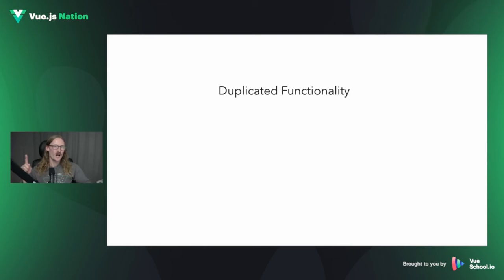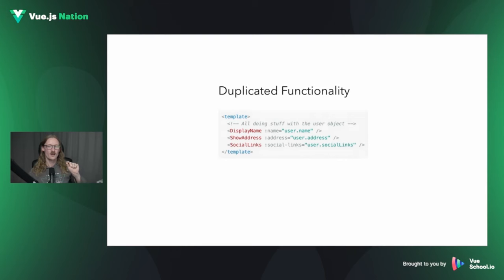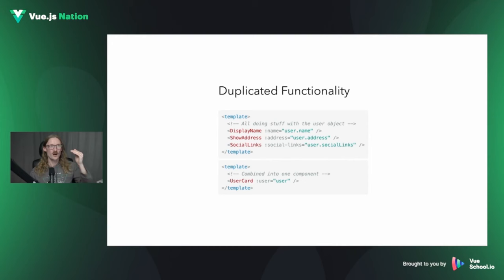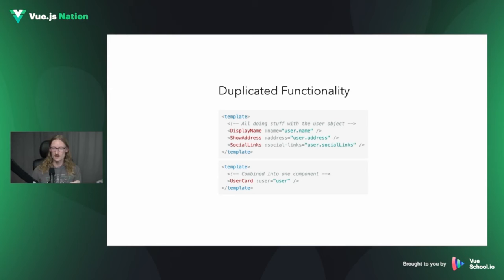Taking those two considerations together, it's generally better to pass a whole object at once. There's another aspect: when several different components are each using part of the same object, that's a strong hint that they should be combined into the same component. If we're accessing data off the same object over and over again across different components, there's likely duplicated functionality. By combining them all into something like a UserCard component, we simplify our codebase and make it easier to understand.